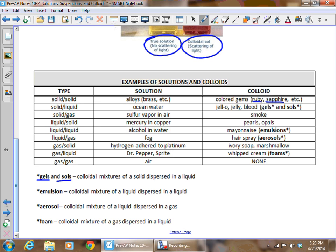A liquid dissolved in a solid is mercury and copper. I love colloids. Pearls, opals, those are examples of colloidal systems of liquids dispersed in solids. That milky look is what you get when that happens. Liquid in a liquid, alcohol and water. But for a colloid, it's mayonnaise.